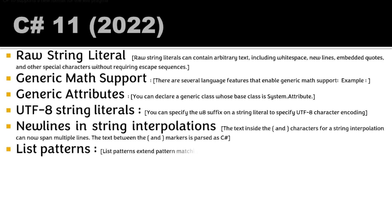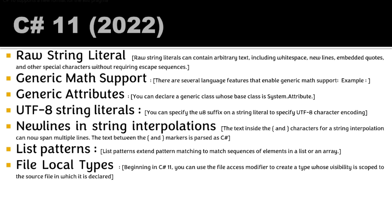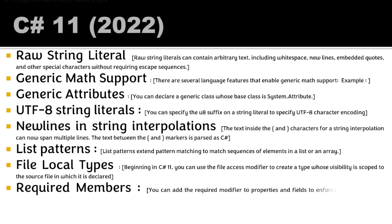List patterns extend pattern matching to match sequences of elements in a list or array. File-local types, introduced in C# 11, use the 'file' access modifier to create a type whose visibility is scoped only to the source file. Required members let you add a 'required' modifier to properties or fields, enforcing that constructors and callers initialize those values. These were the key features of C# 11.